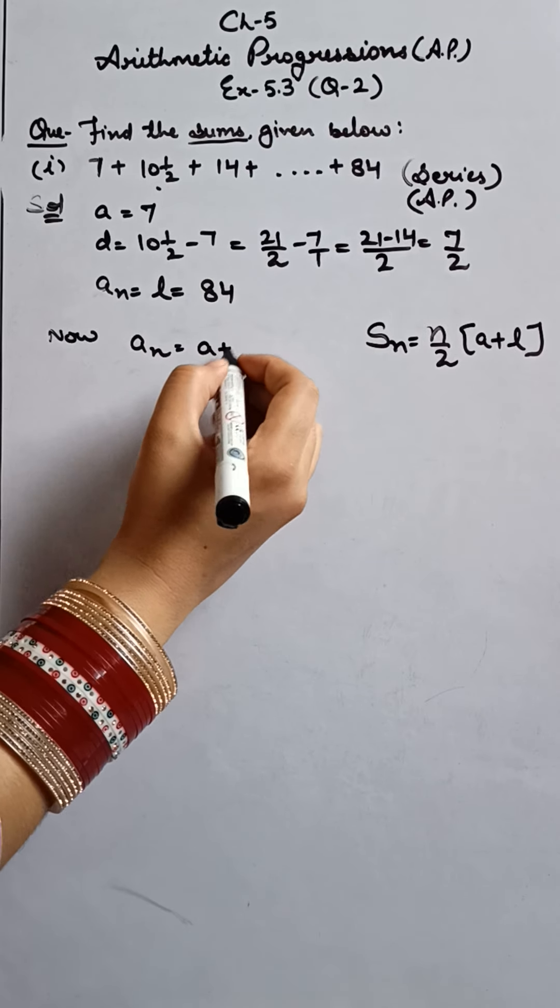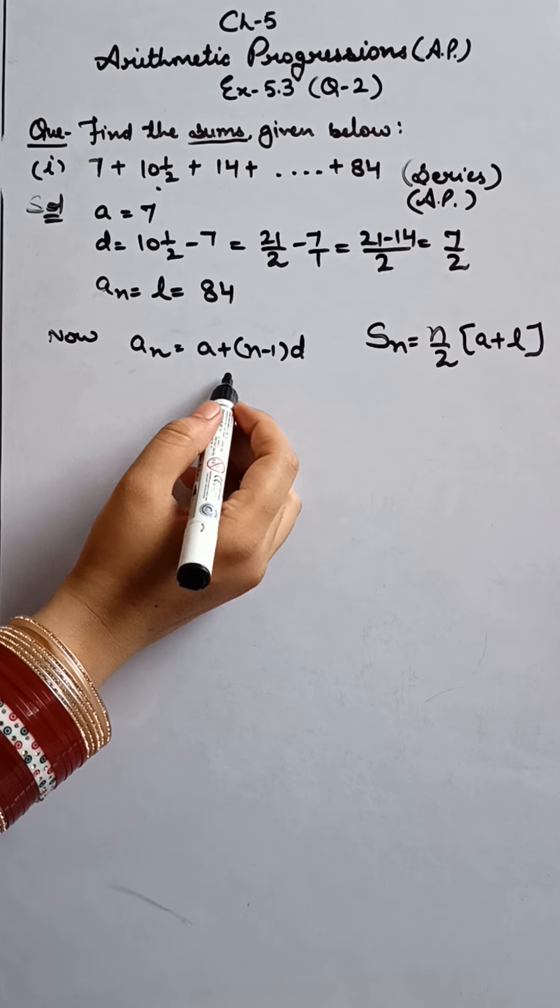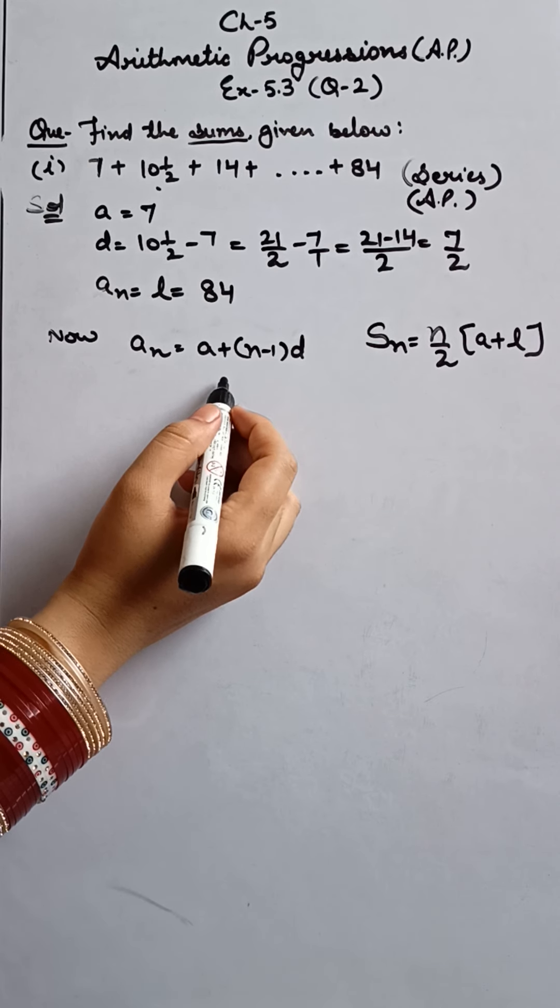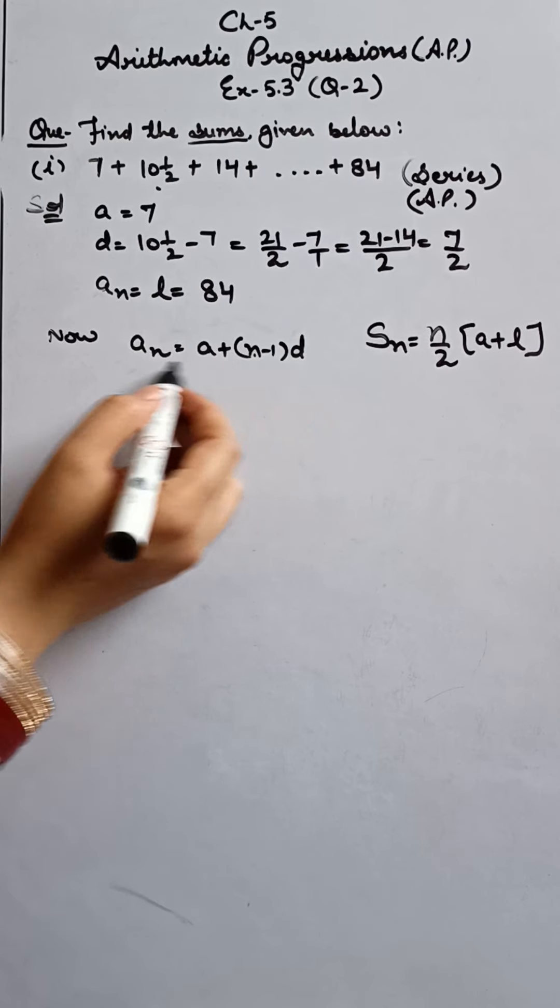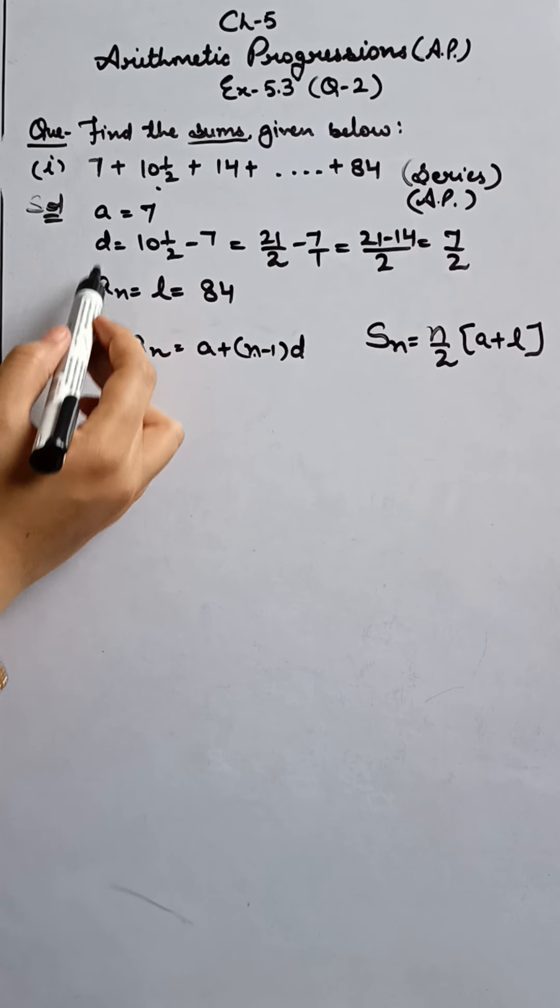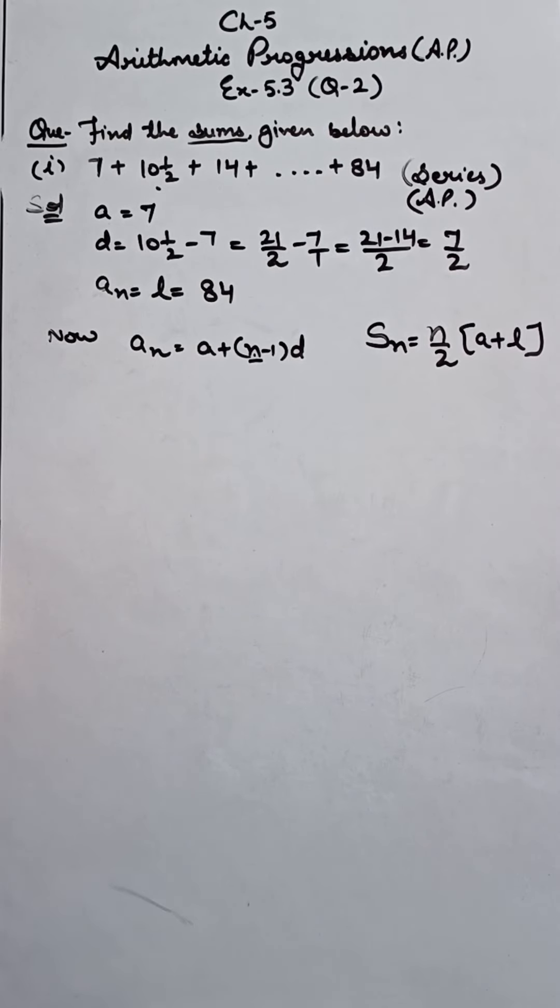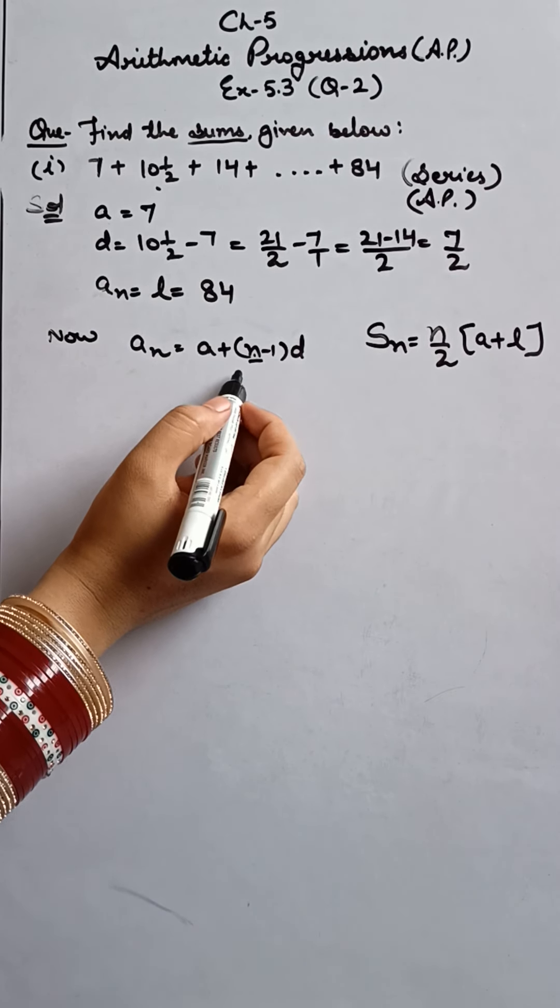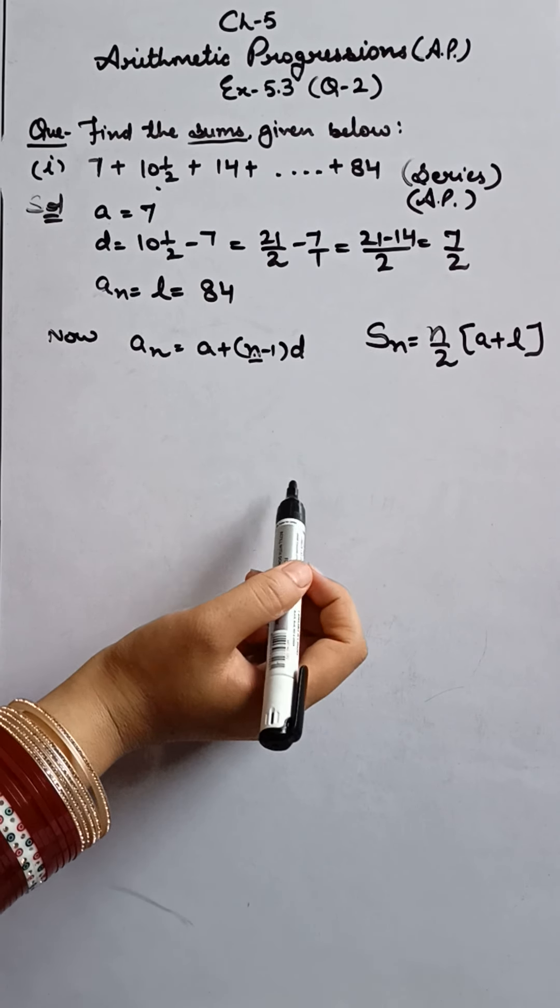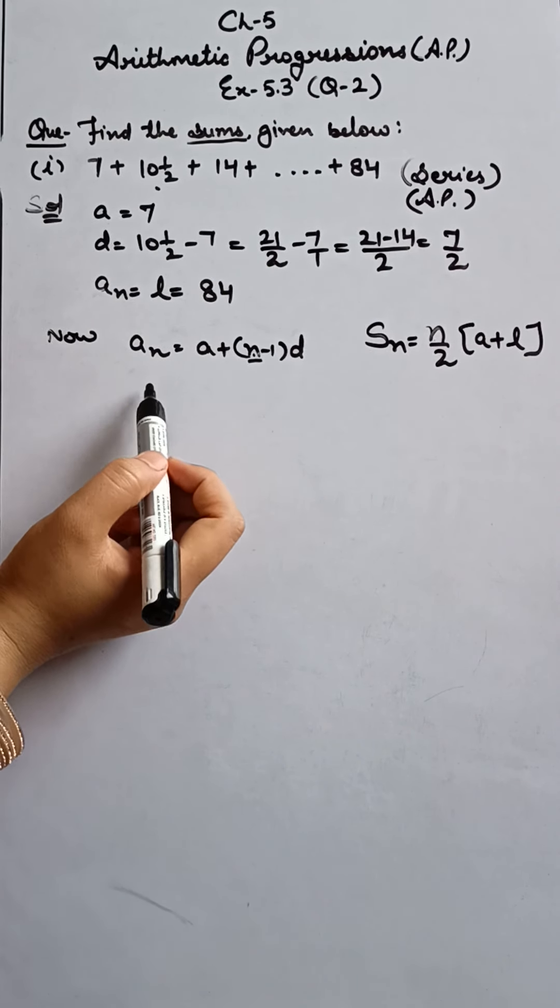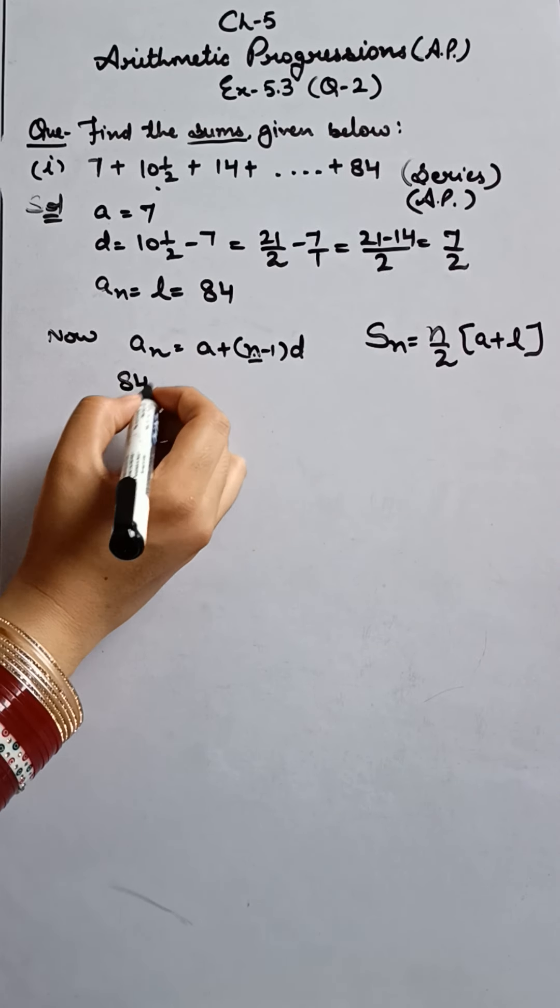By using the formula AN. AN is equals to A plus N minus one into D. The same formula which we used in the previous exercise. Okay? Having four terms: AN, A, N, and D. Out of these four terms, three are already given to us. So can we find out our fourth one? Yes. And why am I applying this here? Because I need to find the sum. And in my sum formula, I require N. And N is not available to me. That's why I am using this formula to find N.